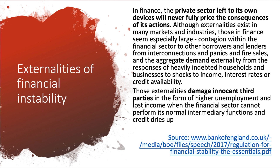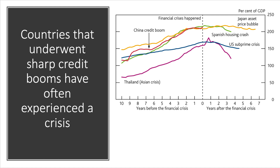People lose their jobs, people lose incomes. Typically, financial crises tend to be predated by countries that have gone through a big, sharp, significant credit boom. This chart from the Bank of England looks at countries where there's been a financial crisis — Spain, Japan, the US subprime crisis, China — and you can see that in the years predating the financial crisis, there was a significant rise in debt as a share of GDP. Thereafter there's a credit crunch and a fall in debt. Debt is often a predictor of financial instability.